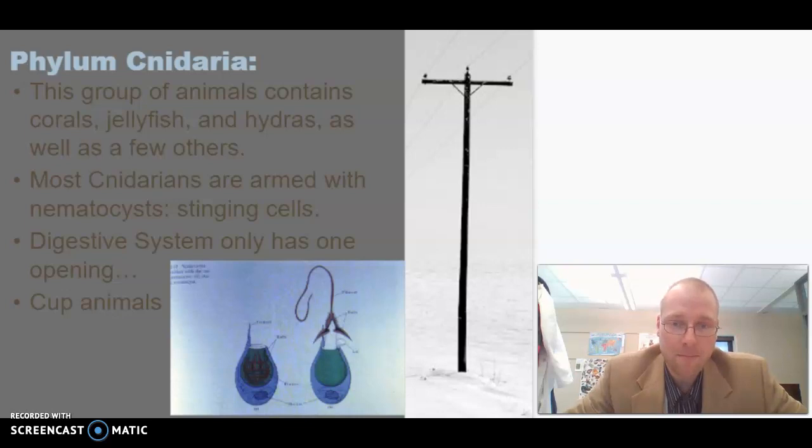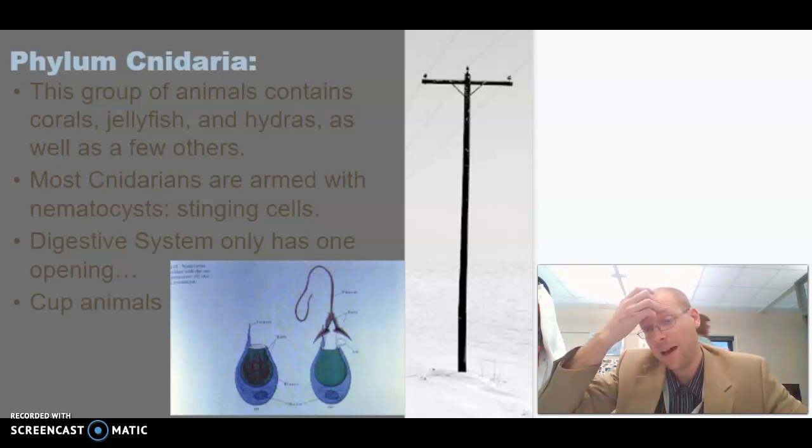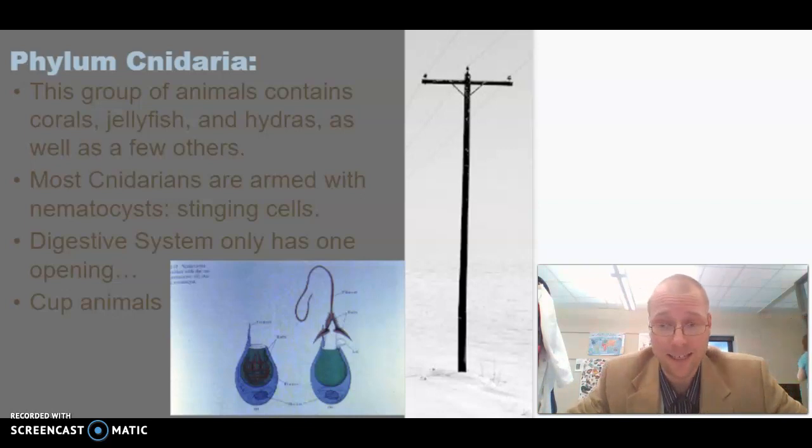Most cnidarians are armed with nematocysts. These are stinging cells. That's how they inject their venom into their prey. So think about jellyfish stinging you. Those nematocysts are on the tentacly army things. Most cnidarians have them. Not all cnidarians are able to penetrate human skin. So some species, either they don't have a toxin that affects mammals, or they can't even penetrate our skin to inject their toxin. So those are the low-risk ones. High-risk ones are like Portuguese man-of-war, which can kill you.